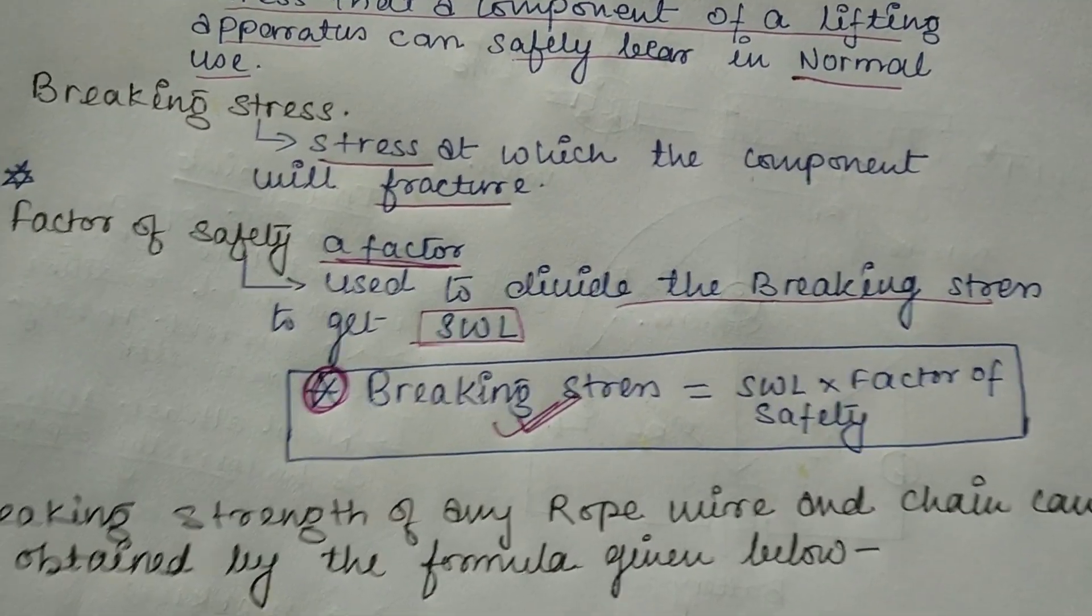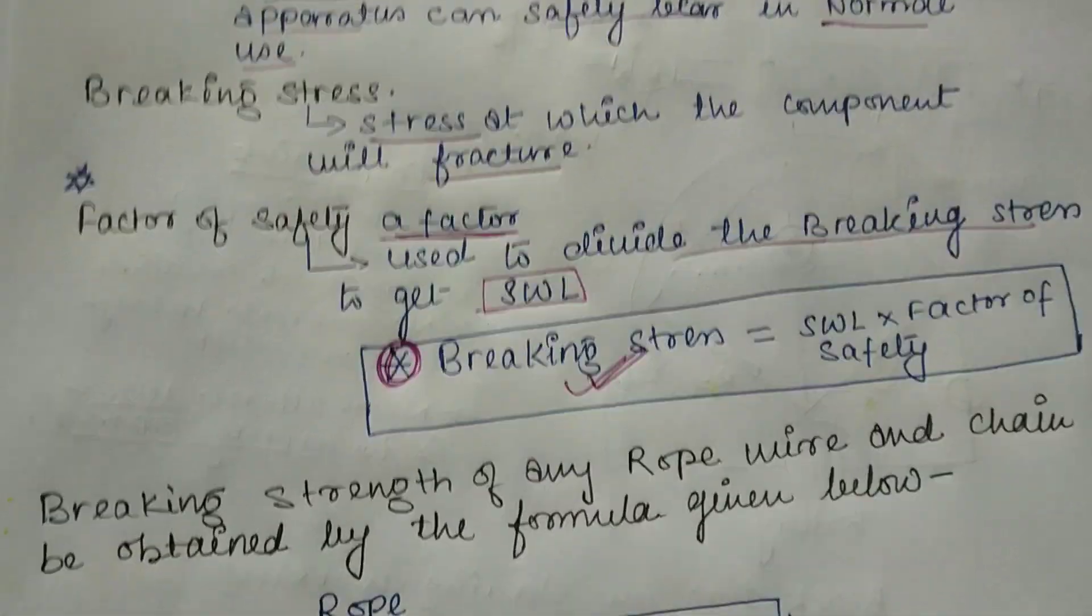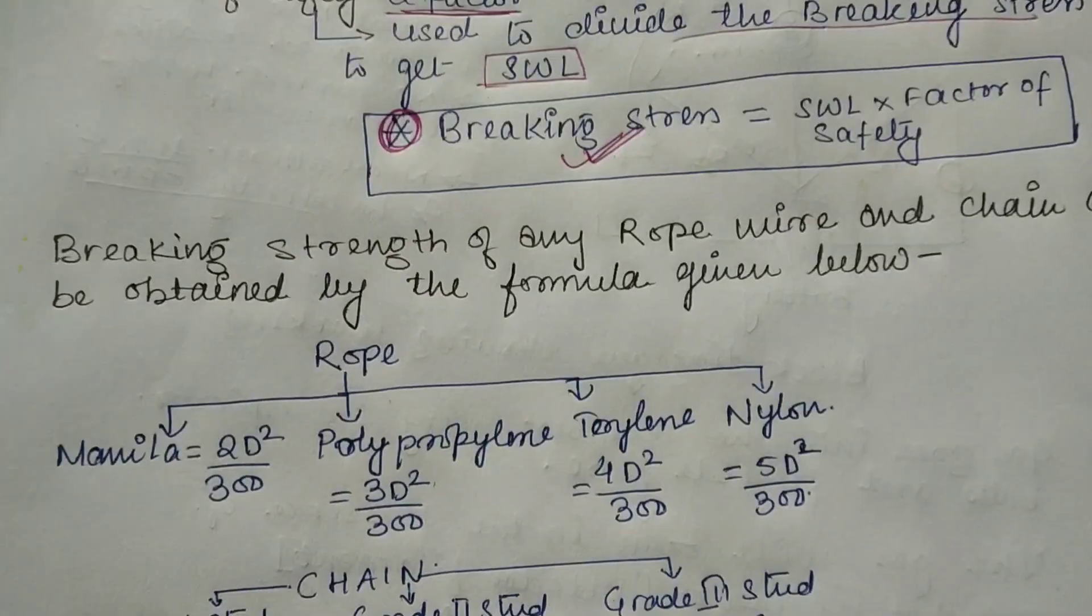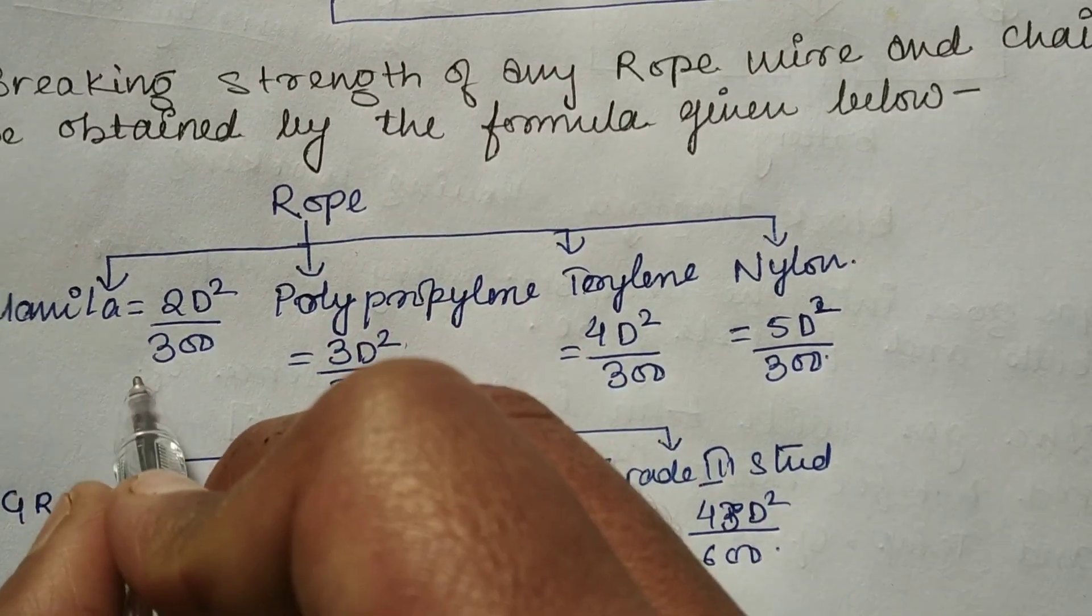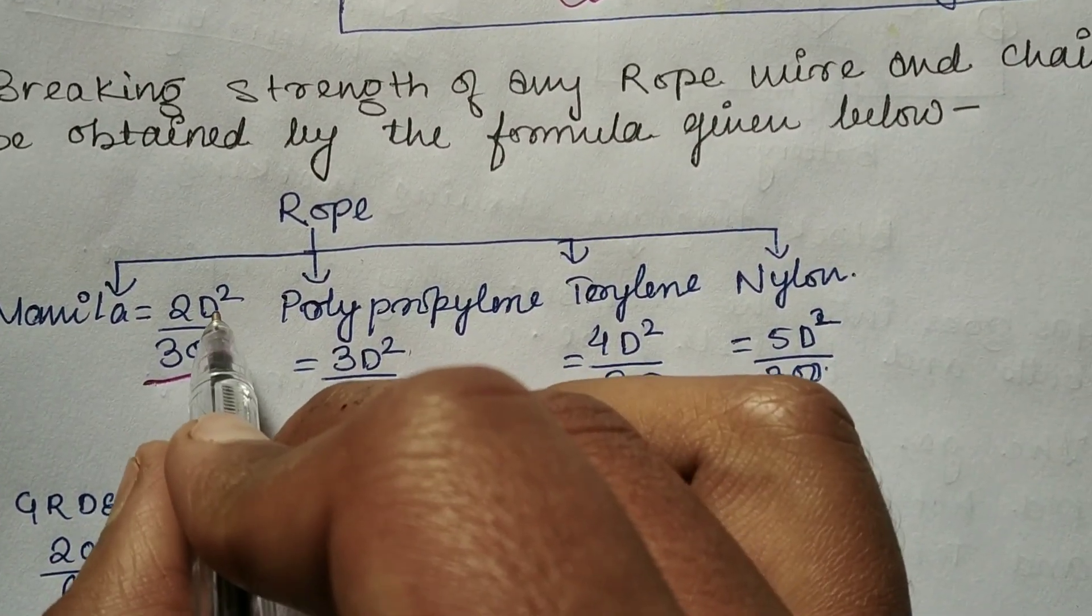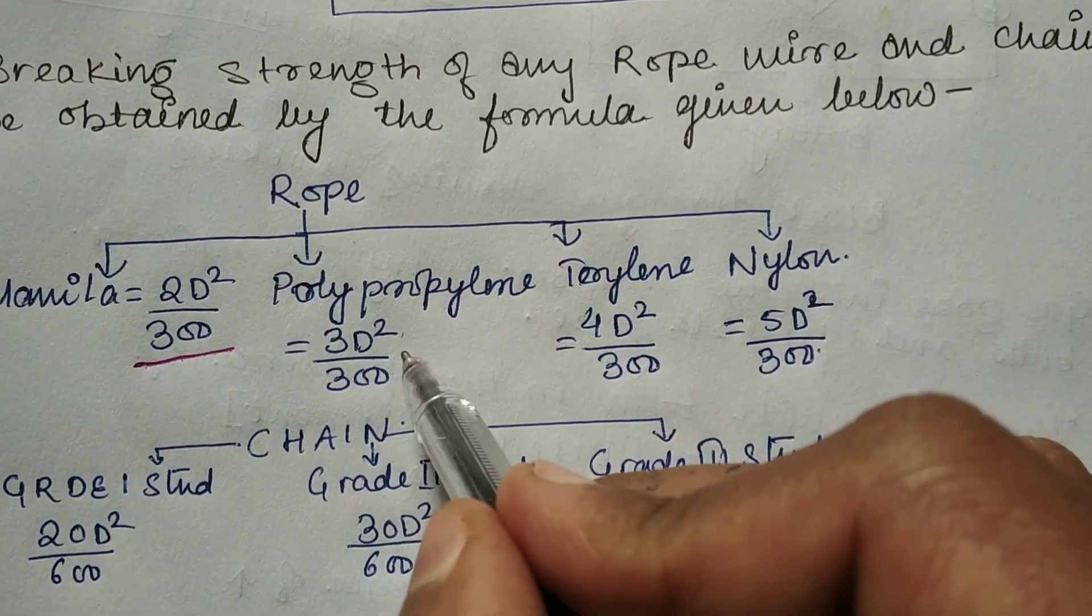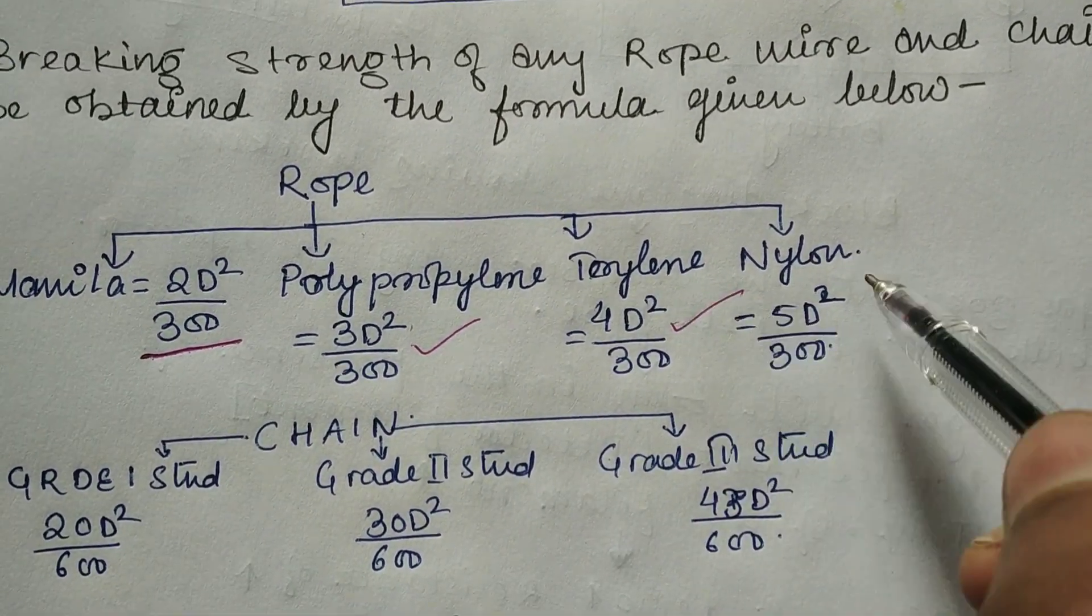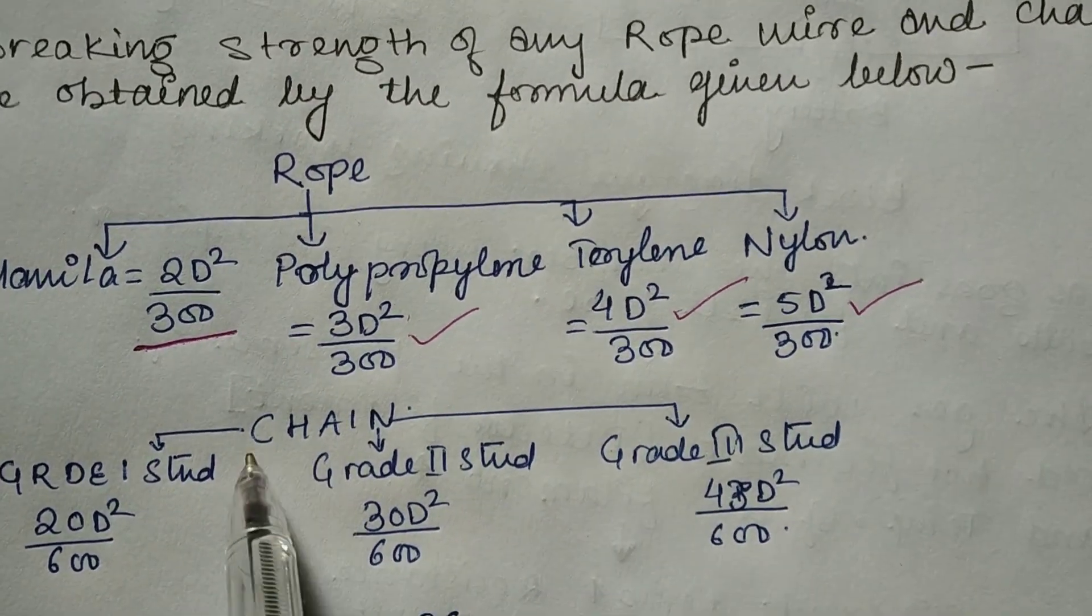Now we'll see different formulas for different types of ropes, chains, and wire to find their breaking strength. For ropes: Manila is 2D²/300, where D is the diameter of the rope. Polypropylene is 3D²/300, teraline is 4D²/300, and nylon is 5D²/300.